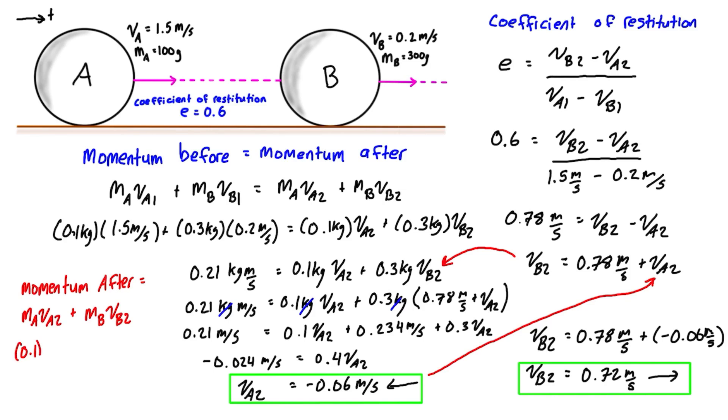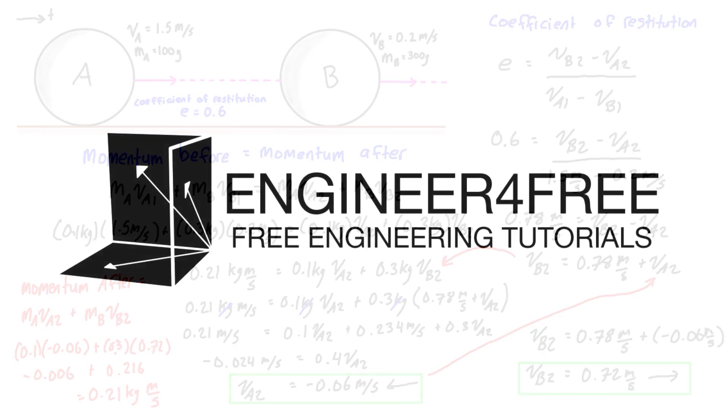So we have 0.1 kilograms times negative 0.06 meters per second plus 0.3 kilograms times 0.72 meters per second. That gives us a value of negative 0.006 plus 0.216, which equals 0.21 kilogram meters per second, which is great. That's exactly what we had for momentum before, which equals what we have for momentum after. And because we calculated that based on the velocities after impact that we found, we know that we've done it correctly.